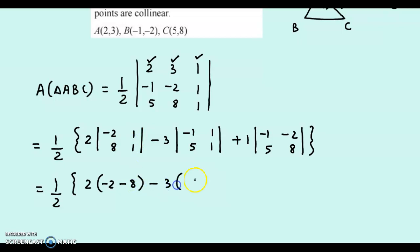Minus 3 times. -1 into 1, that's -1. Minus 5 ones, that's 5. Plus 1 into. -1 into 8, that's -8. Minus 5 into -2 is -10, so this would become +10.